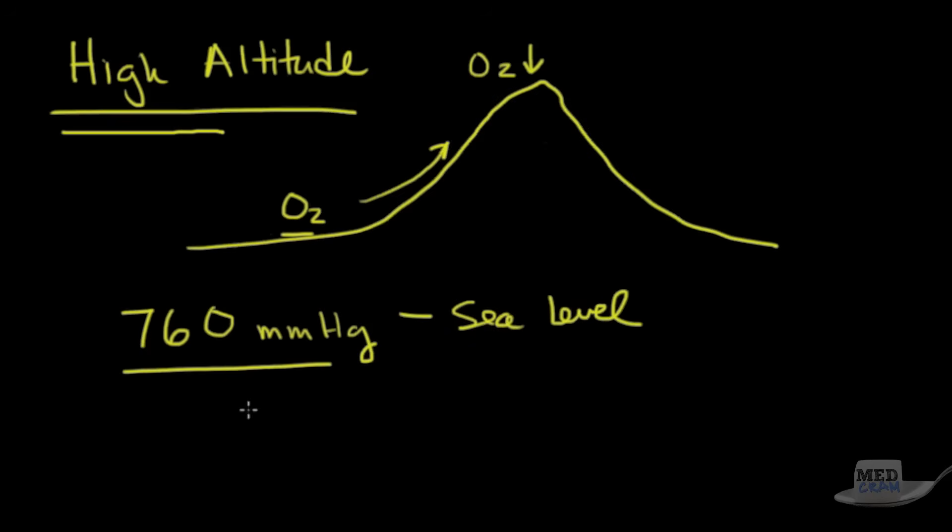Now we know that oxygen makes up about 21 percent of that. So what happens as you go up in altitude? Does the fractional or partial pressure of oxygen go down? No, it doesn't. What actually happens is the total barometric pressure goes down. And as a result, the 21 percent of that pressure becomes smaller.